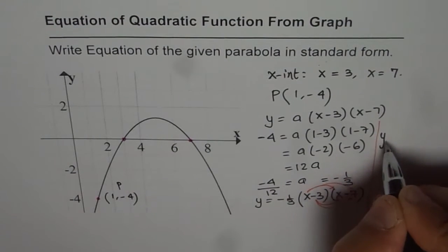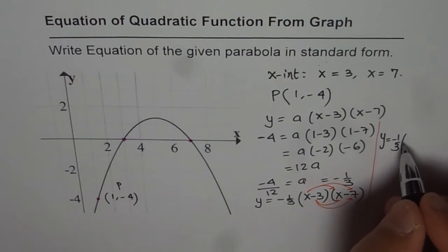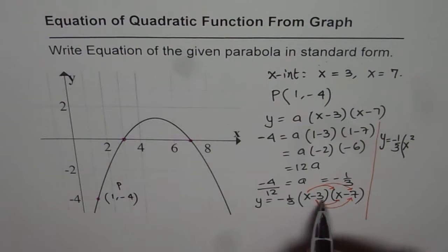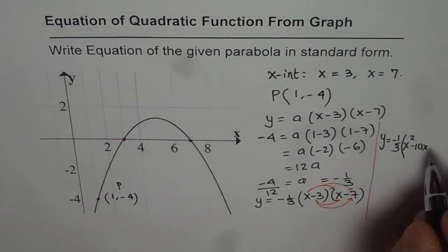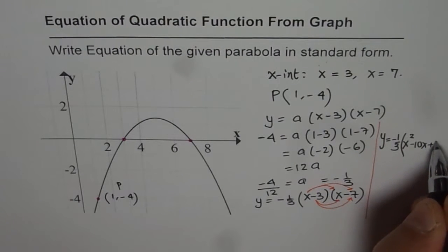So we can get y = -1/3, and when you multiply you get x². And then -3x - 7x will give you -10x. And -3 times -7 is +21. So that becomes our equation.